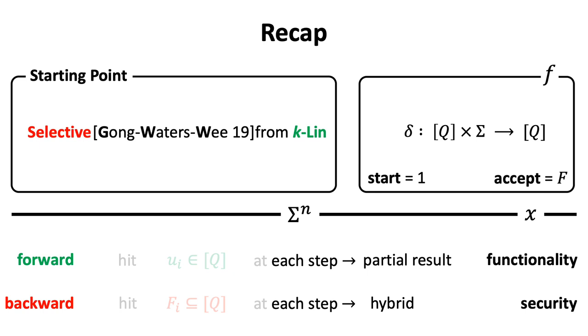Each step in the backward computation of DFA defines a hybrid in the security proof. This means that we need to know one state to compute every partial result.